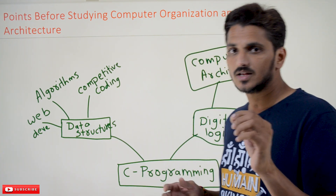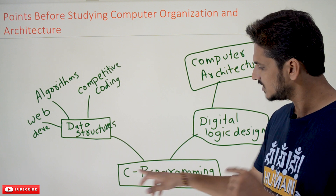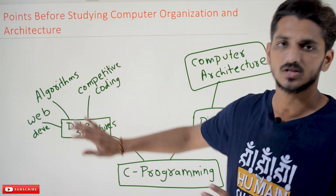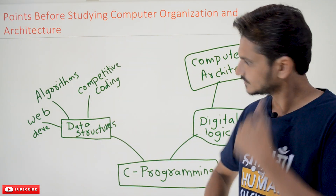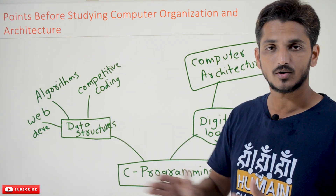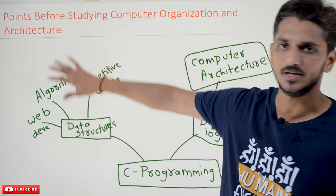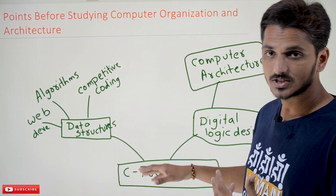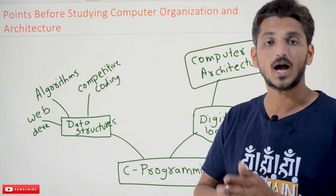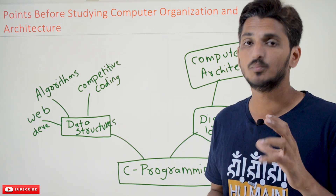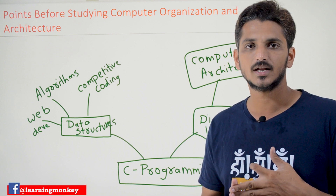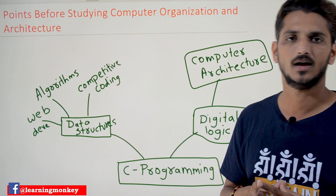A CS student should start his career with C programming. After completion of C programming, he has to start studying data structures to improve his coding knowledge. After that he goes to algorithms, competitive coding, web development, or whatever path he chooses. Not only coding — understanding hardware is also very important to understand the latest technologies: cloud, machine learning, and artificial intelligence.